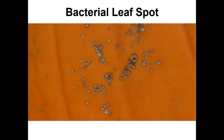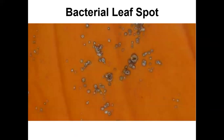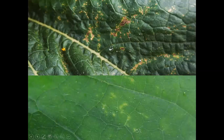Bacterial leaf spot is another bacterial disease. It overwinters in crop residue like so many of the diseases. It causes variable-size lesions — ranging from the size of a pinhead to two or three millimeters in diameter — tending to have a darker margin. The inside of the lesion really loses its integrity and becomes very soft, leading to soft rots in the fruit. Comparing to anthracnose, which is intact and doesn't penetrate through the rind, the bacterial leaf spot will penetrate right into the fruit and cause it to rot seemingly from the inside out.